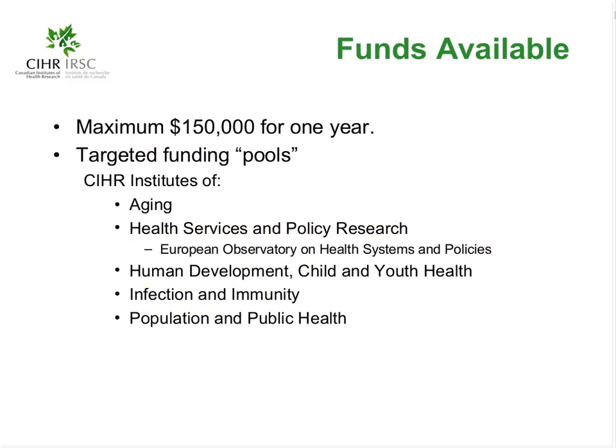Up to $150,000 are available to each project for a period of one year, and up to 15 applications can be funded based on the funds currently available. Specific CIHR institutes have dedicated funding to support projects relevant to the EIHR priorities of healthcare financing and funding models, governance and accountability, and sustainability of healthcare systems. These partner institutes are aging, health services and policy research, human development, child and youth health, infection and immunity, and population and public health. More detailed descriptions are provided at the end of the funding opportunity under partner collaborator descriptions.